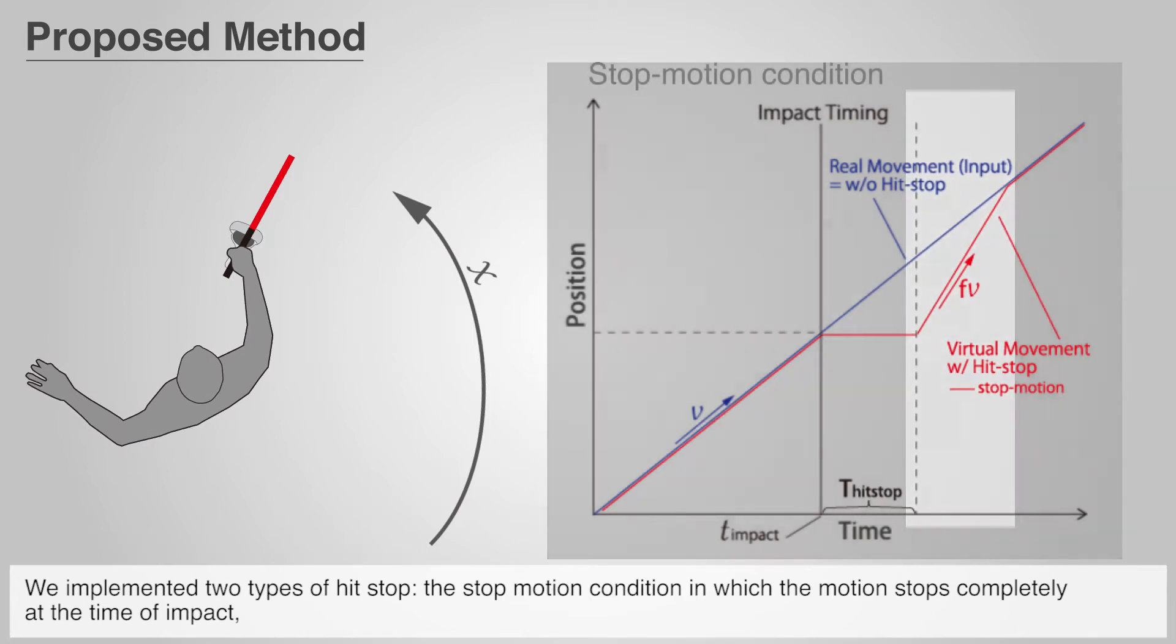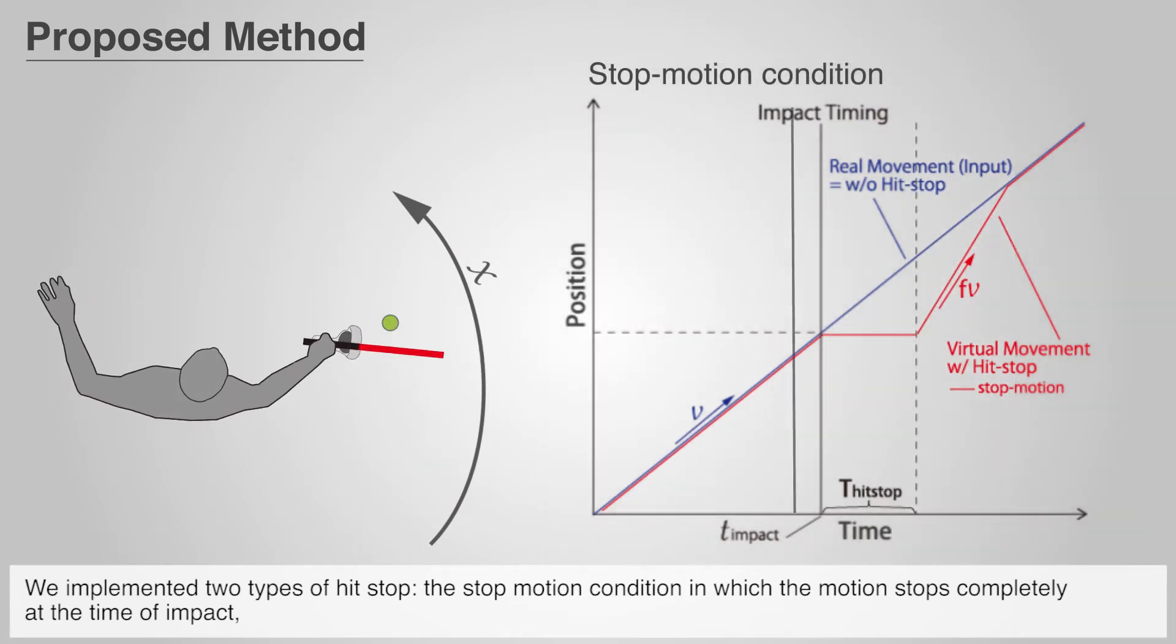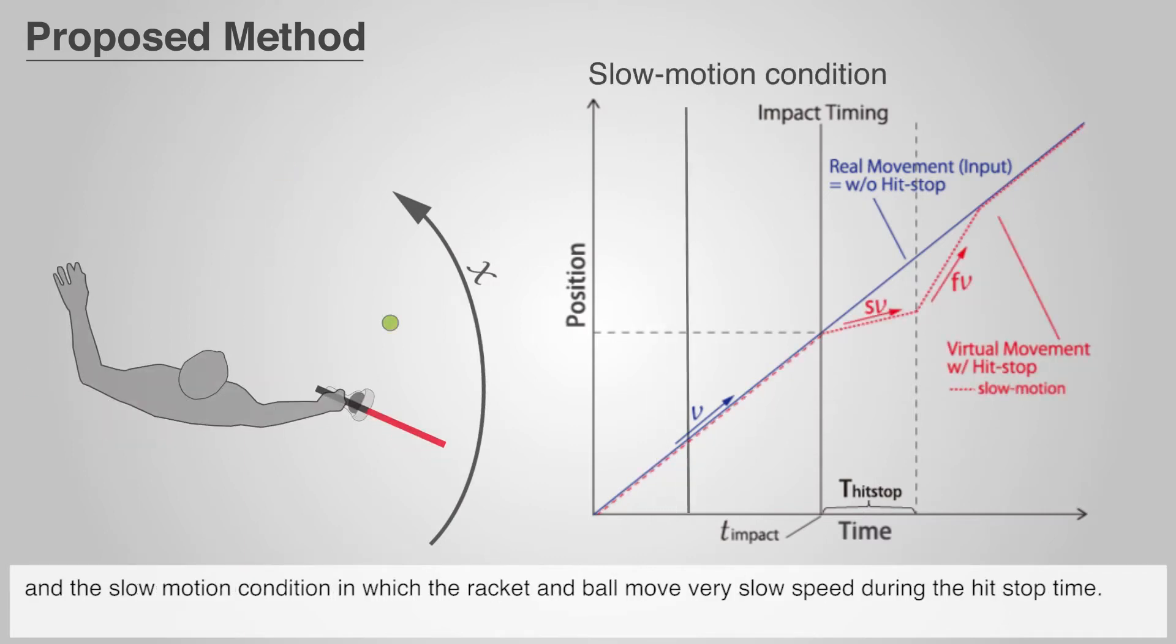We implemented two types of hit stop: the stop motion condition, in which the motion stops completely at the time of impact, and the slow motion condition, in which the racket and ball move at very slow speed during the hit stop time.